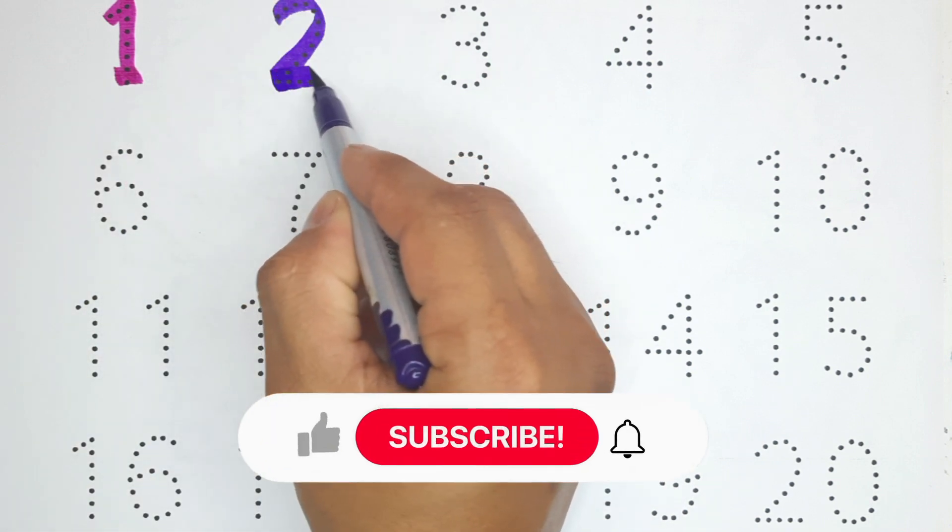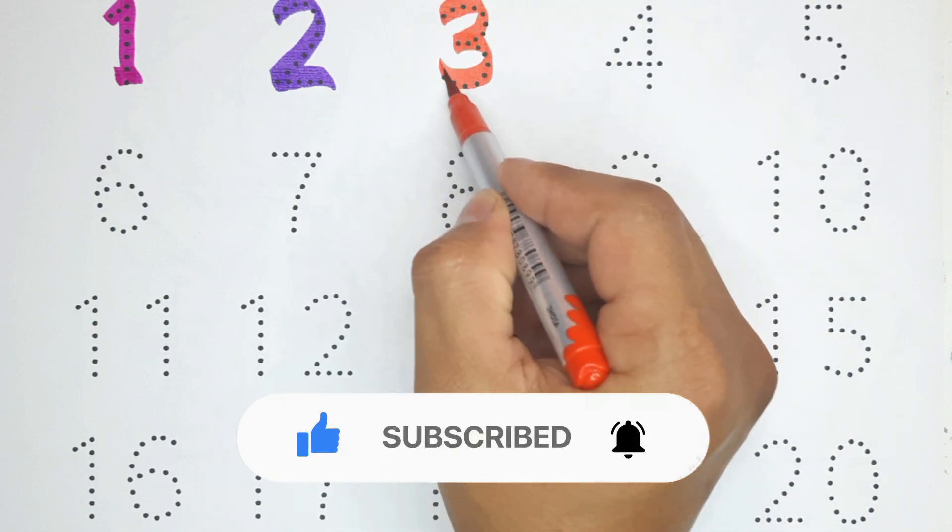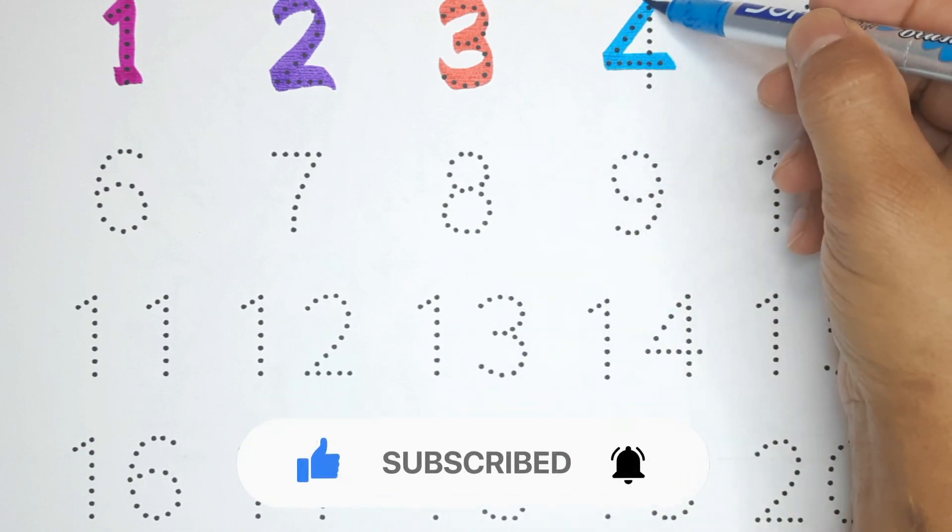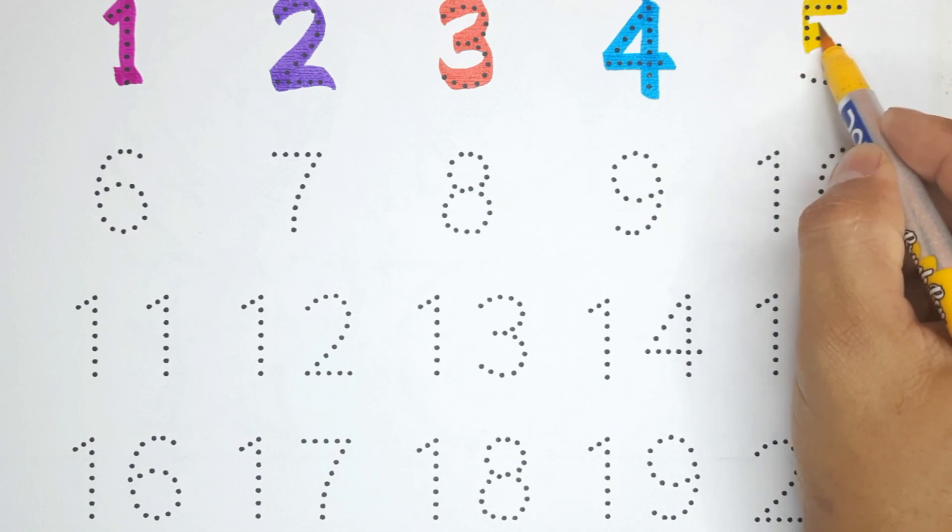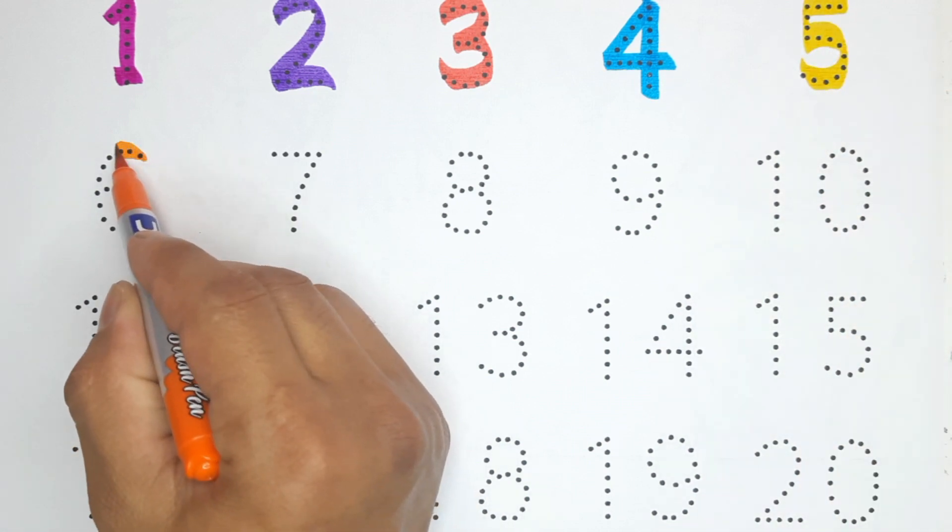2, this is number 2. 3, this is number 3. 4, this is number 4. 5, this is number 5. 6, this is number 6.